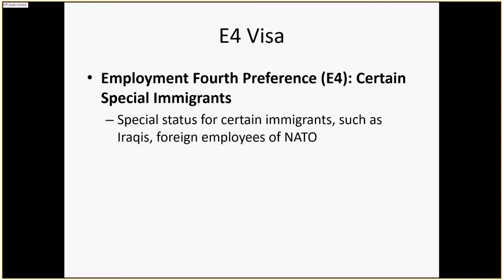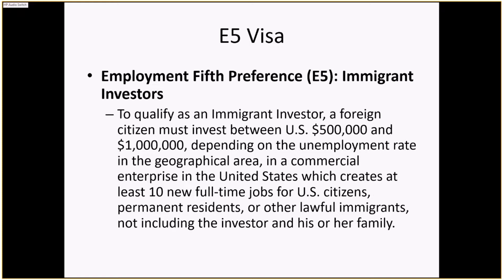E4 visas are for certain special immigrants — such as Iraqis, foreign employees of NATO, etc. — and certain groups identified through visa lotteries. E5 visas are for immigrant investors: a foreign citizen must invest between $500,000 and $1 million depending on the unemployment rate of the geographic area, in a commercial enterprise in the United States that creates at least 10 new full-time jobs for US citizens, permanent residents, or other lawful immigrants, not including the investor or their family.